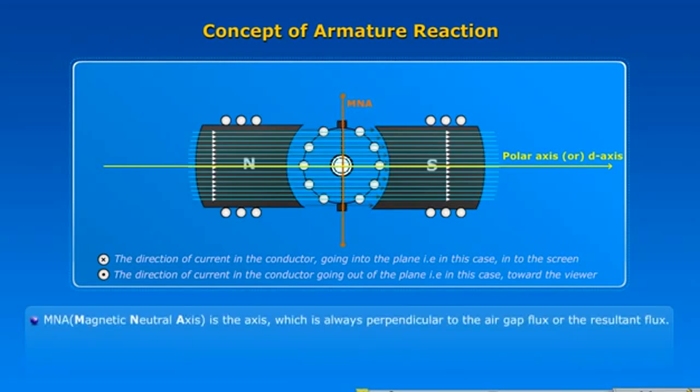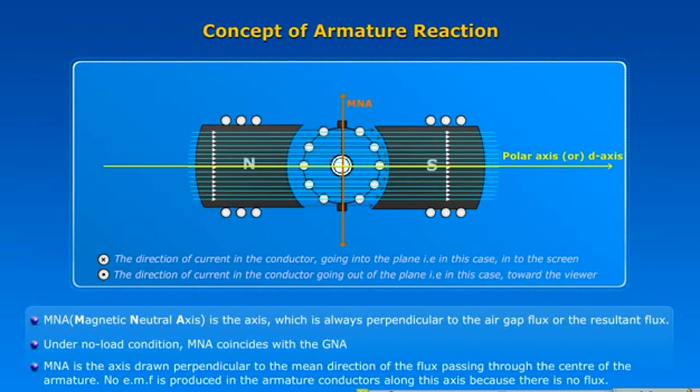MNA, Magnetic Neutral Axis, is the axis which is always perpendicular to the air gap flux or the resultant flux. Under no-load condition, MNA coincides with GNA. MNA is the axis drawn perpendicular to the mean direction of the flux passing through the center of the armature.